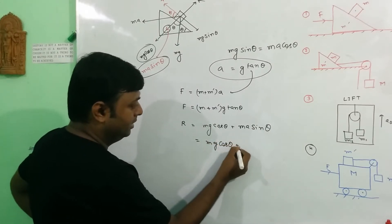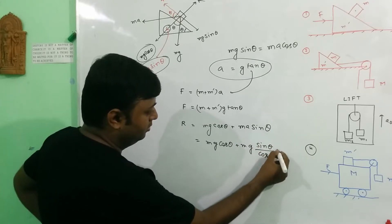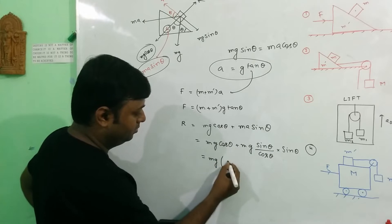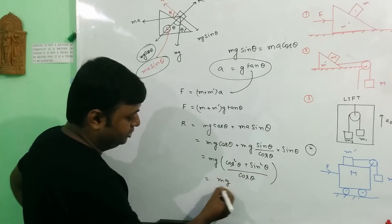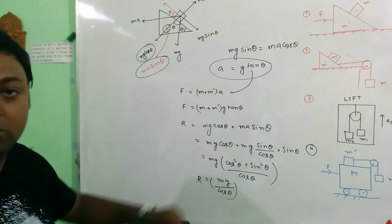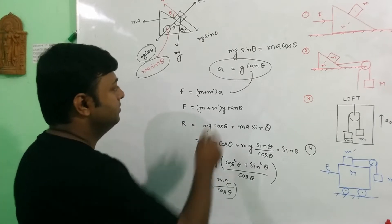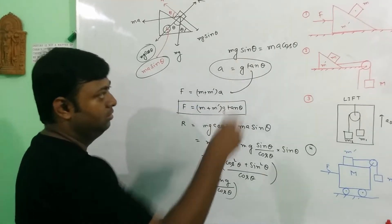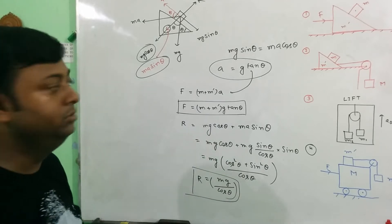Now putting the value of a, that is g tan theta: R equals m·(g tan theta)·sin theta + mg cos theta. This gives mg·(sin²theta/cos theta) + mg cos theta, which equals mg·(sin²theta + cos²theta)/cos theta. That means R equals mg/cos theta. This is the normal reaction. So this is the acceleration, this is the force for which mass m is not moving in the downward direction, and R = mg/cos theta is the normal reaction of mass m on the wedge.